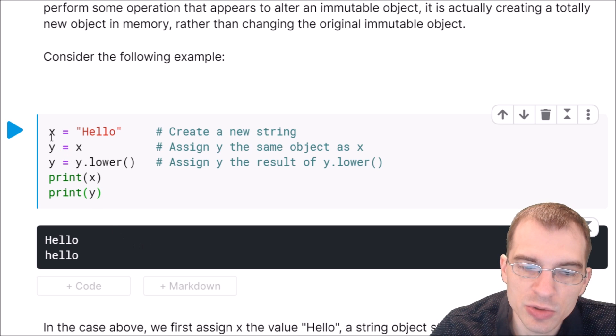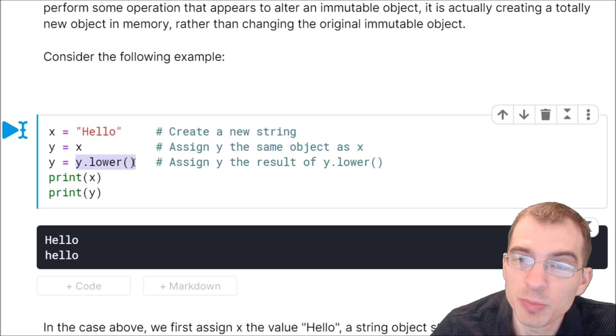In contrast, if we were to do a similar thing but use an object that was mutable, which means it can be changed in memory instead of making a new object, then x and y would still refer to the same thing. So I'll give an example of that below with a list.